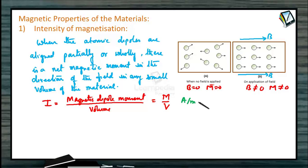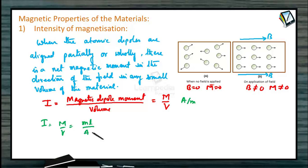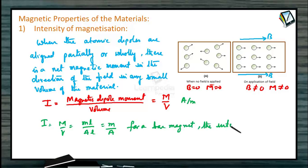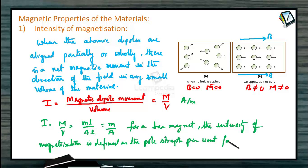Consider a bar magnet of pole strength M, length L, and area of cross-section A. The intensity of magnetization of the bar magnet is I = M/V = M·L / (A·L) = M/A. Therefore, for a bar magnet, the intensity of magnetization is defined as the pole strength per unit cross-sectional area.